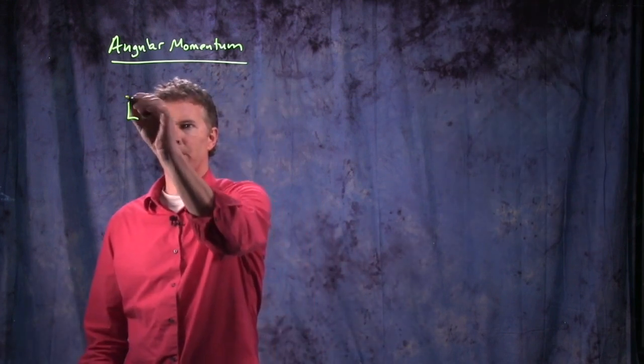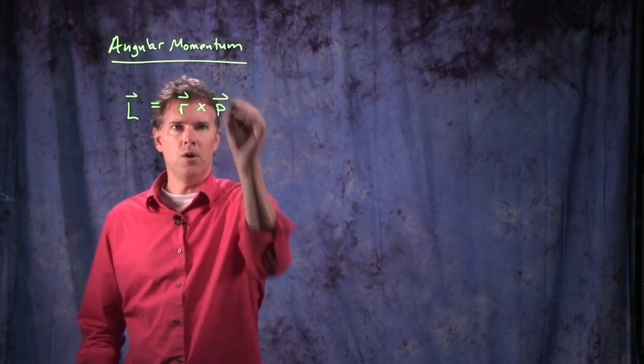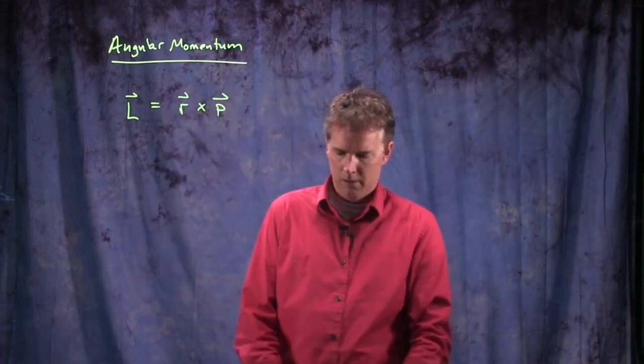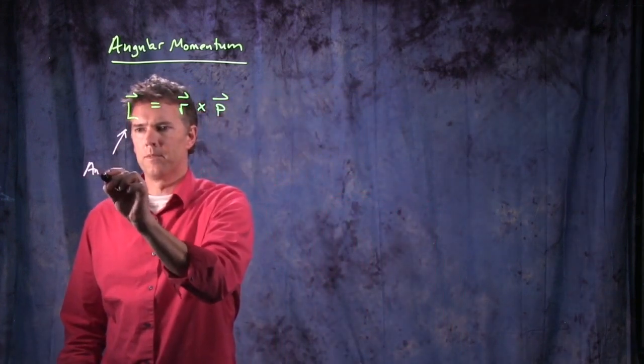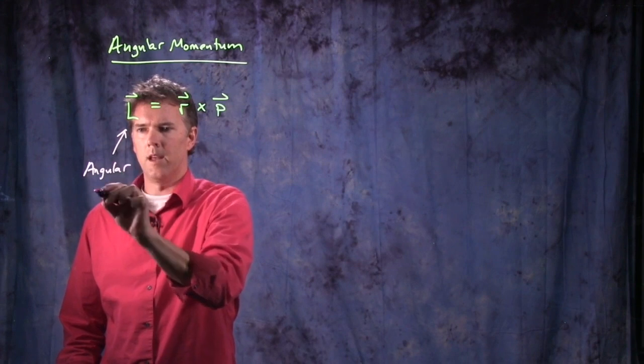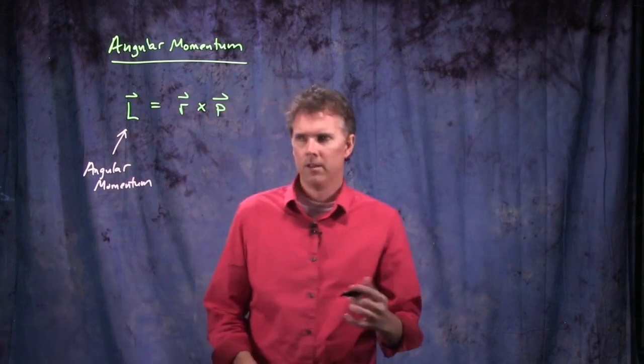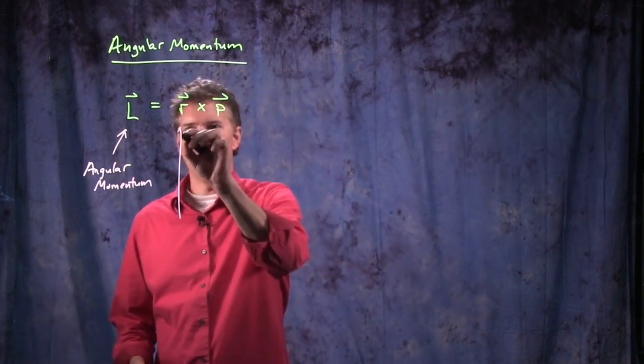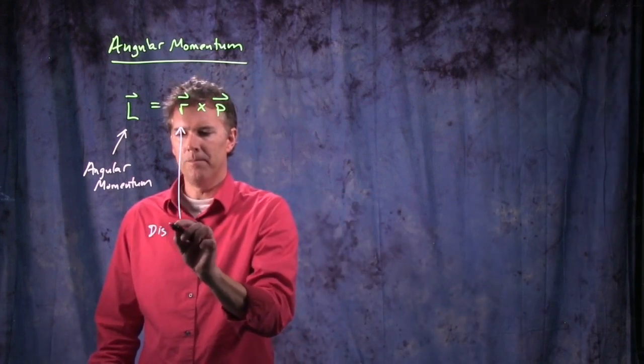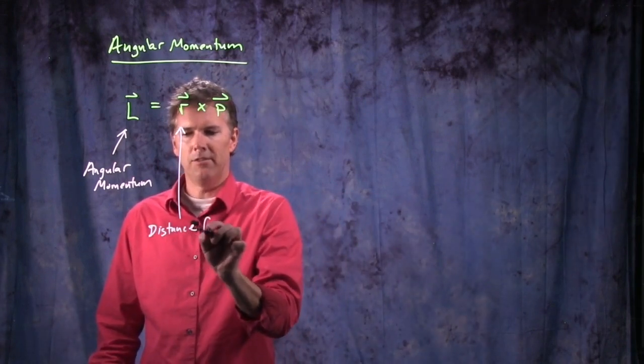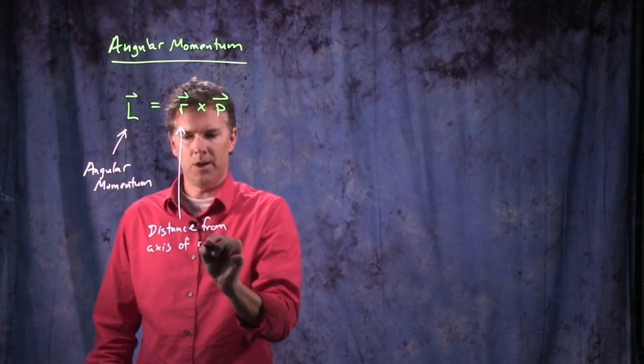So angular momentum we actually write with an L, and L is equal to R cross P. So let's identify what these different terms are. This is our new angular momentum term, and again, for some reason we write it with an L because we've run out of other letters. R is some sort of distance, and in fact it is the distance from the axis of rotation to the object.